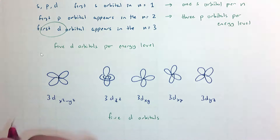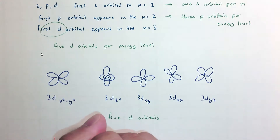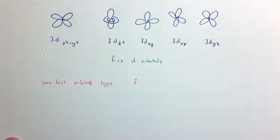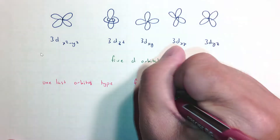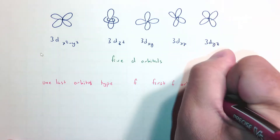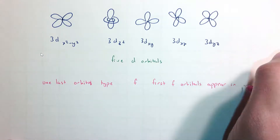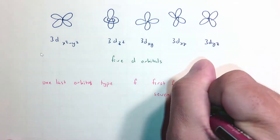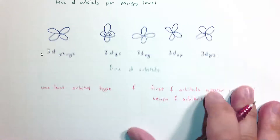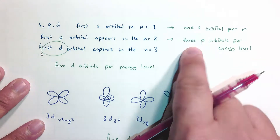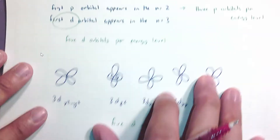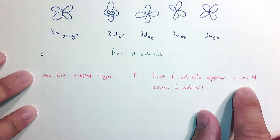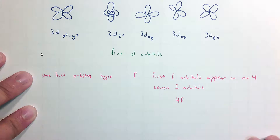There's one last orbital type, and that's f. The first f orbitals appear in energy level 4, and there are seven of them. There's a pattern: one s orbital per energy level, three p orbitals per energy level once you start into the p's, five d orbitals per energy level once you get to the d's, and seven f orbitals once you get to the f's. So the first f orbital would be 4f.